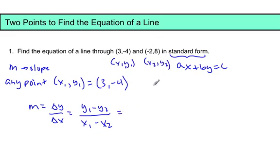Plugging them into our equation, y1 is -4 minus y2 is 8, and then x1 is 3 minus, be careful of our signs, -2. Which simplifies to -12 over 5, 3 plus 2 is 5. So there is my slope, nice and messy looking slope.